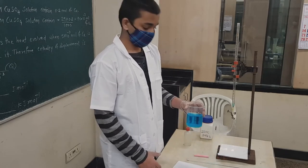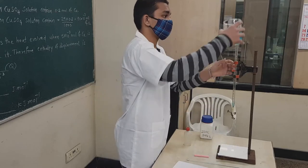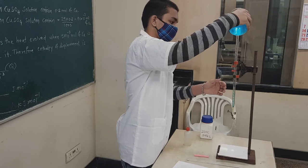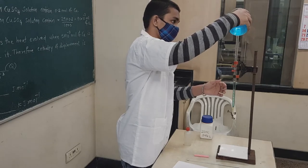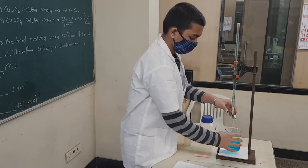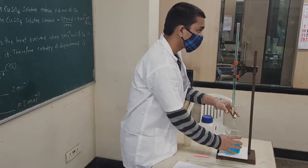For the experiment, we require 25 ml of copper sulfate solution which we will take from the burette. The student is now filling the burette up to the 0 marking. Observe this very carefully. The 0 level is adjusted with the upper meniscus because the solution is colored.